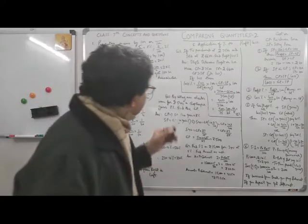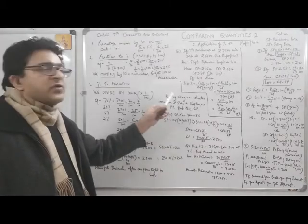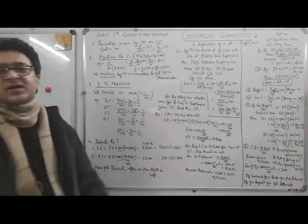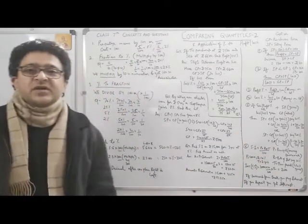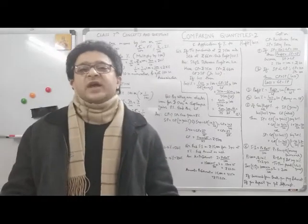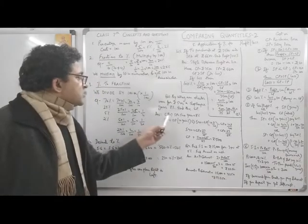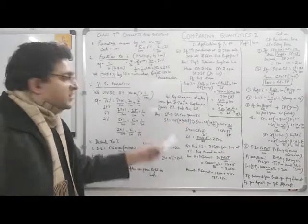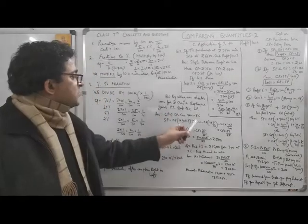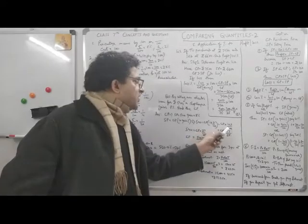Next question: by selling an electric iron for Rs. 540, a shopkeeper gains 8%. Find the CP. So SP = 540 is given, gain = 8% is given, and CP is unknown. Apply the formula: SP = CP × (1 + gain%) = CP × (1 + 8/100) = CP × 108/100.